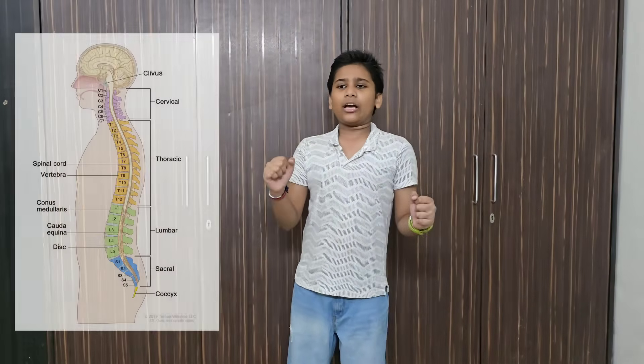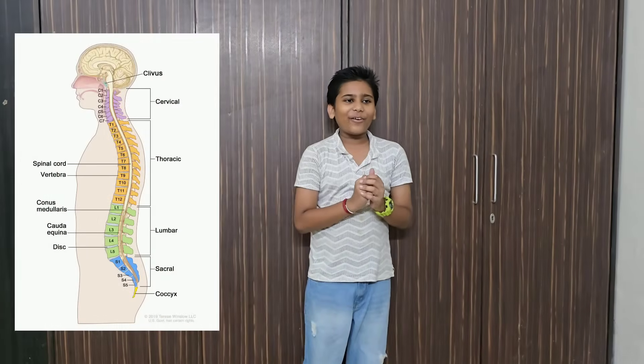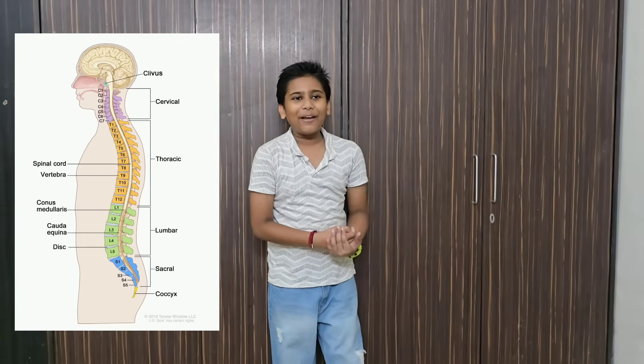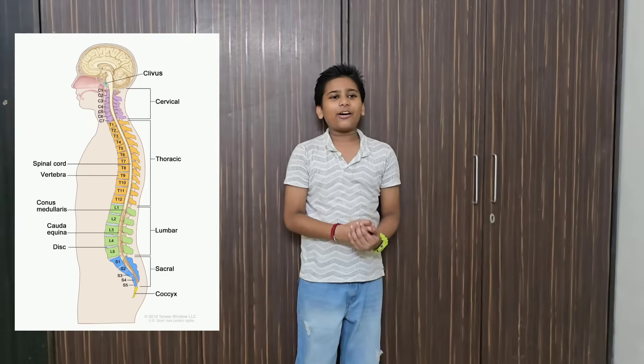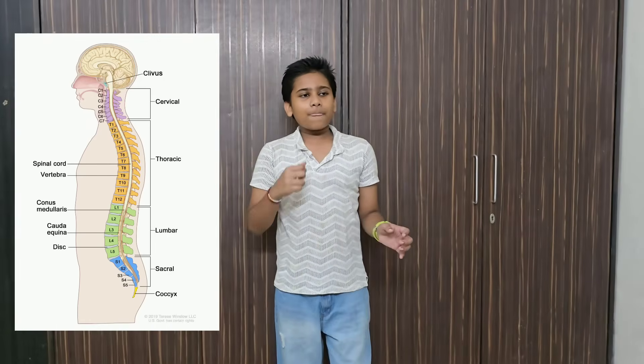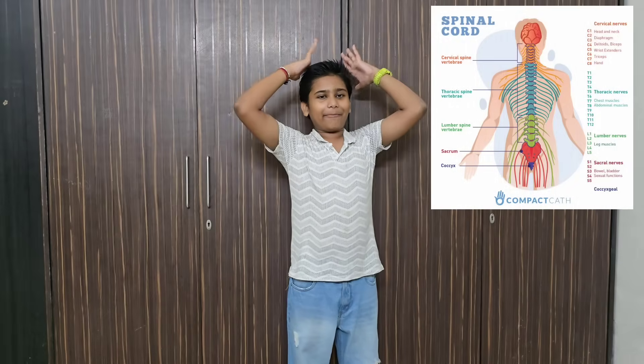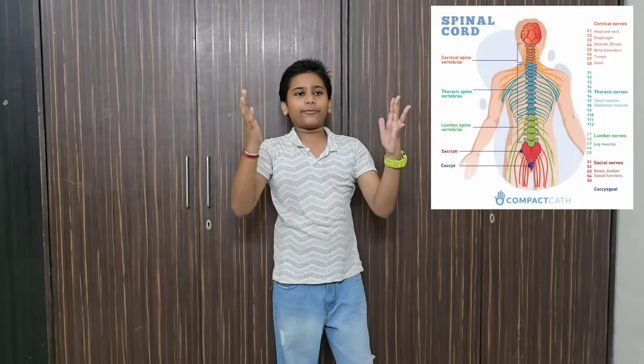I left one thing in the last video, which is the spinal cord. We will now take a closer look at the spinal cord — its definition and a detailed explanation. The spinal cord connects our body to the entire brain of our nervous system.